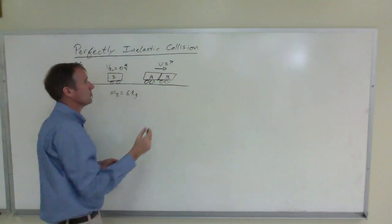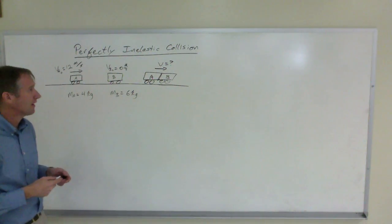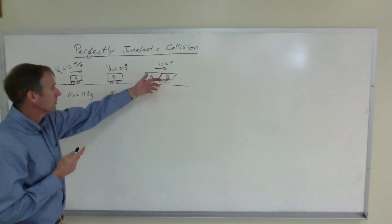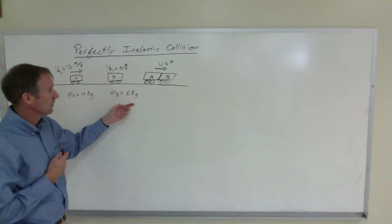And what I want to figure out is what is the speed with which they travel together as a single 10 kilogram unit afterwards, four and six being 10 kilograms.